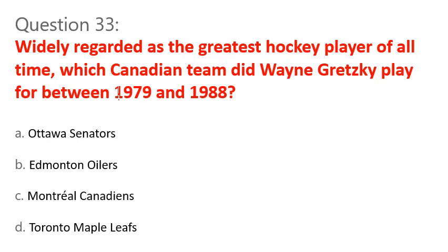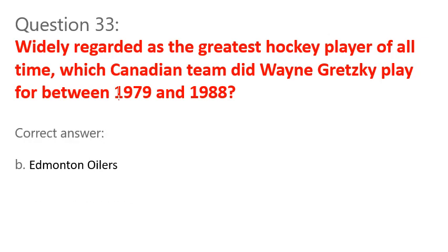Question 33. Widely regarded as the greatest hockey player of all time, which Canadian team did Wayne Gretzky play for between 1979 and 1988? A. Ottawa Senators. B. Edmonton Oilers. C. Montreal Canadiens. D. Toronto Maple Leafs. Correct answer: B. Edmonton Oilers.